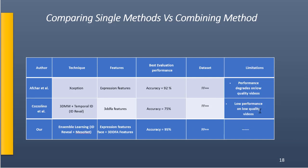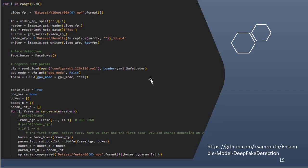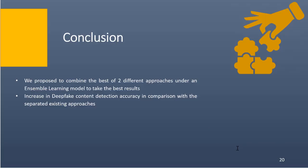Our code, inspired by Afchar et al. and Cozzolino et al., is available on our GitHub page. To conclude, we proposed combining the best of two different approaches under an ensemble learning model, successfully increasing the accuracy of detecting deep fake content — in particular face swap expressions — compared to the individual existing approaches. As future work, we plan to include more approaches and techniques into the ensemble model and explore enhanced biometrics beyond facial expressions to detect fake videos. Thank you for listening; feel free to contact us via email.